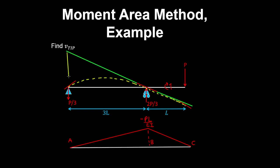So this distance is a tangent at A relative to B. And this distance here is a tangent at C relative to B. And by similar triangles, this triangle here has a length of 3L. And this triangle here has a length of L. So by similar triangles, this distance here is a tangent at A relative to B on 3.